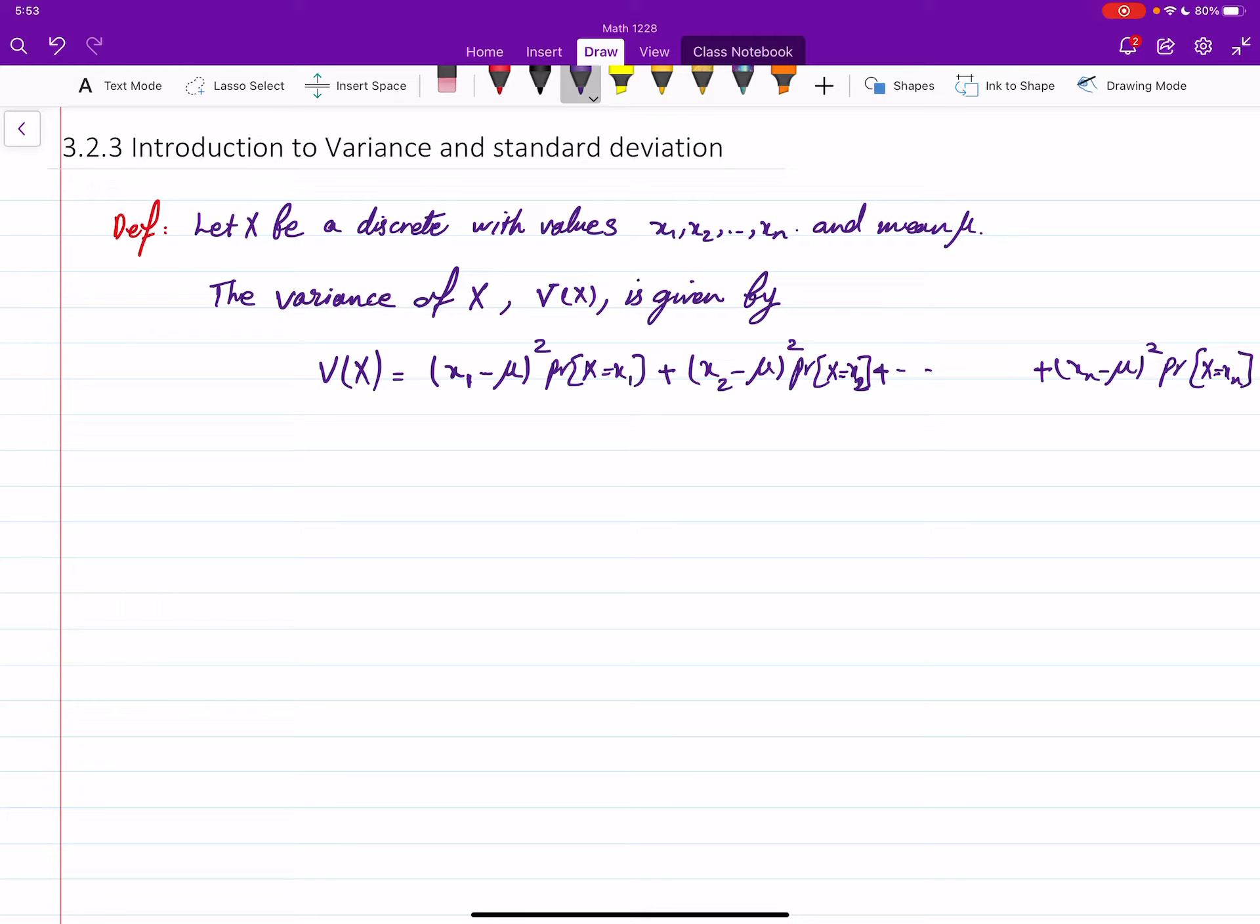So you first find μ, find differences of the values and μ, square them, multiply by the corresponding pdf value, then add them. Note that V(X) is going to be a number, a positive number—well, better to say a non-negative number, it could be zero.